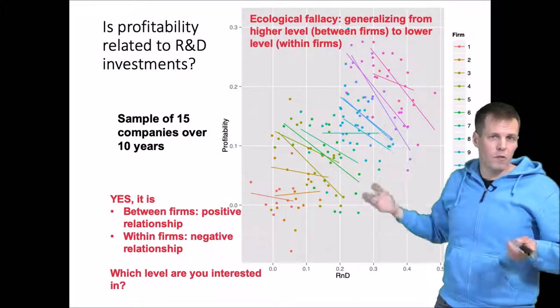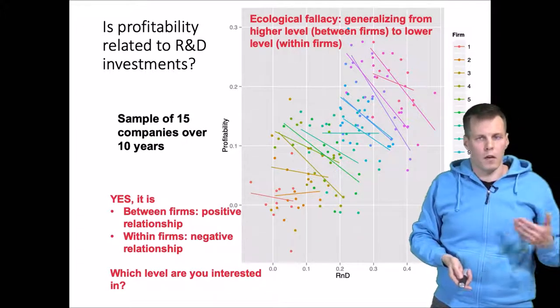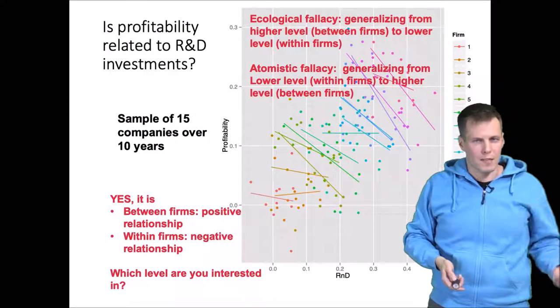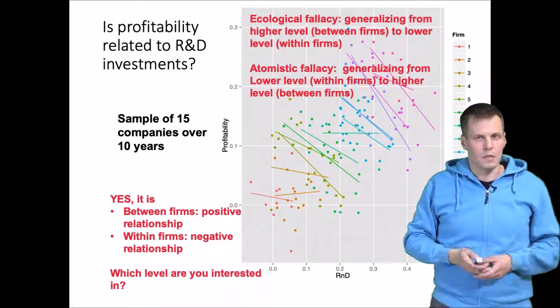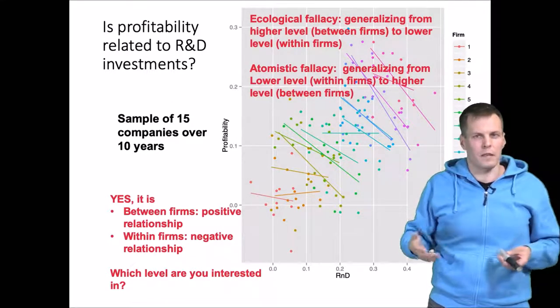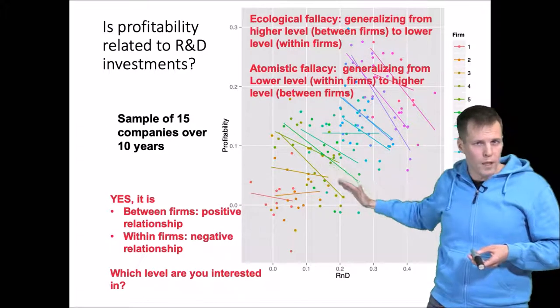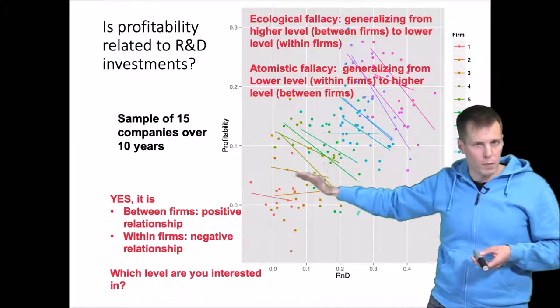If the effects are not the same, we are committing ecological fallacy. The opposite is atomistic fallacy. The idea of atomistic fallacy is that we are generalizing from these within company trends to between company differences.